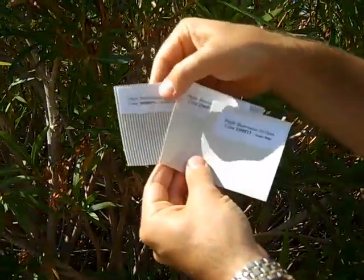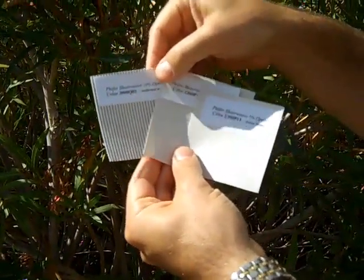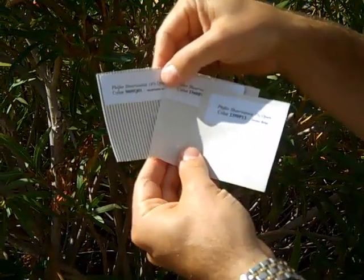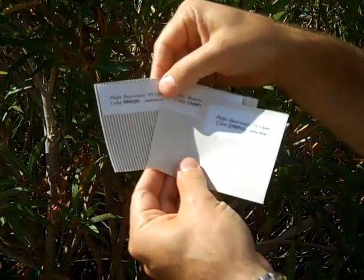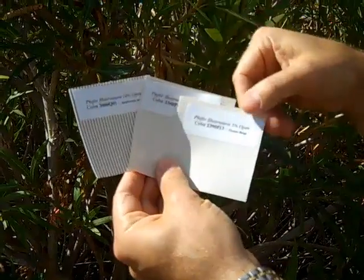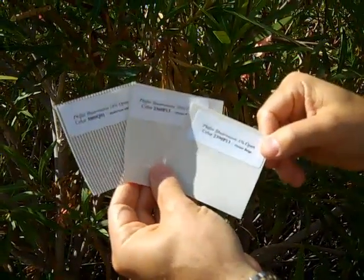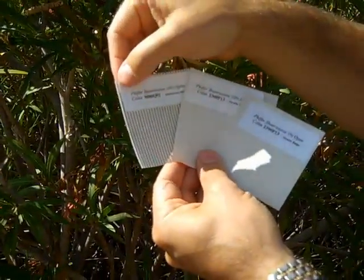One thing to think about is that the higher the number, the more light is transmitted, the lower your privacy is. Basically, if you can see out, people can see in. So for privacy considerations, choose a lower number. For greater view through, choose a higher number.